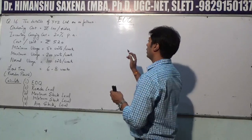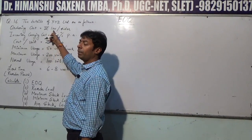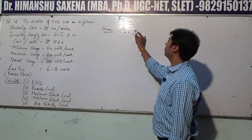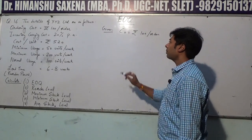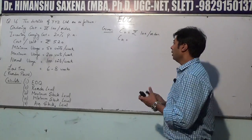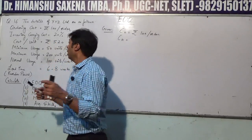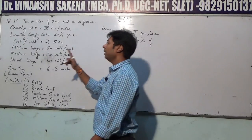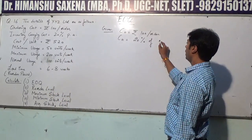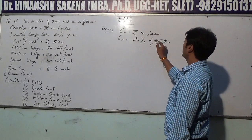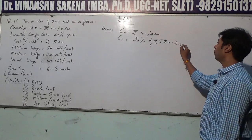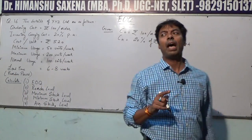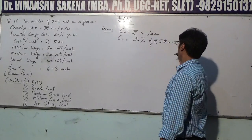The ordering cost is ₹100 per order. For the carrying cost (CH — holding cost or carrying cost), it is 20% of the unit value. The cost per unit is ₹520, so 20% of ₹520 equals ₹104. So we have ordering cost = ₹100 per order, and carrying cost = 20% of 520 = ₹104.